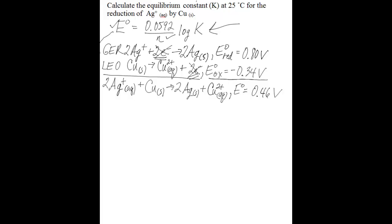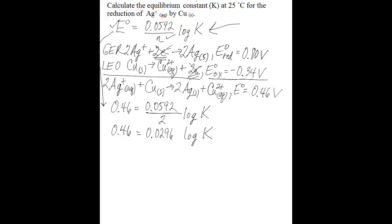So now you have the information that you need to use this equation to find K. Substituting in the known values, you have 0.46 volts for your E° value, and then 0.0592 divided by N, N being the number of moles of electrons transferred. You can see from your balanced half reactions that that number is 2. Then you multiply that by the log of the equilibrium constant K. So you end up with 0.46 equaling 0.0296 times log of K, and then you divide both sides by 0.0296 to give you log of K equal to 15.54.